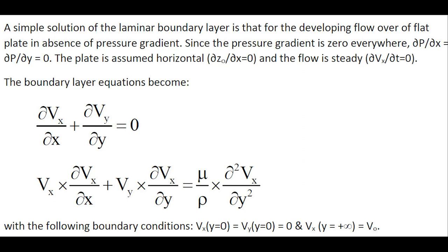A simple solution of the laminar boundary layer is that of the developing flow over a flat plate in absence of pressure gradient. Since the pressure gradient is zero everywhere, the plate is assumed horizontal and the flow is steady.